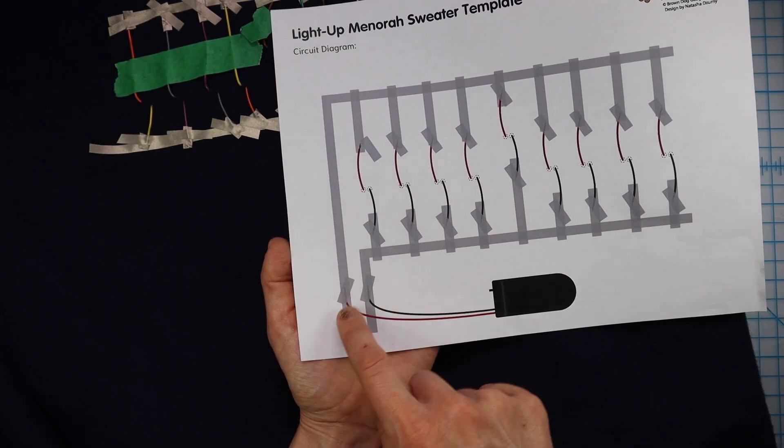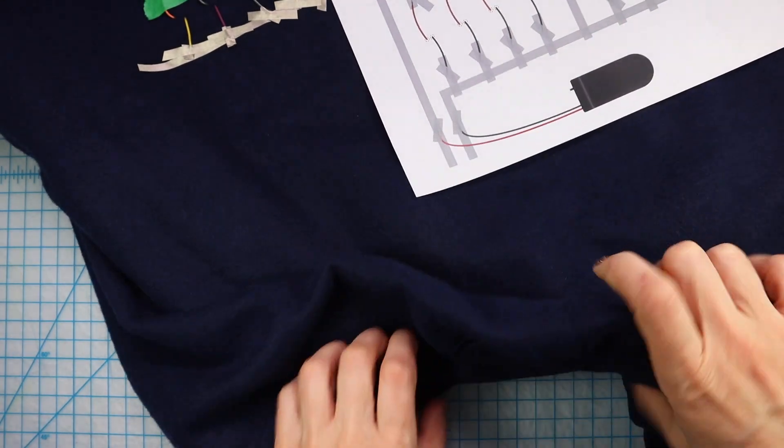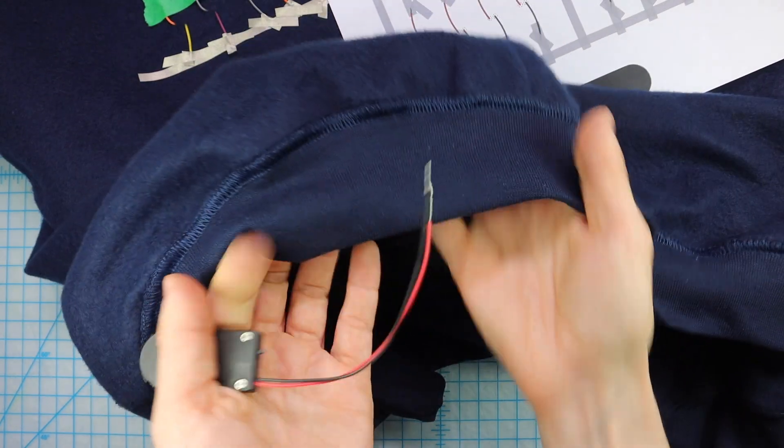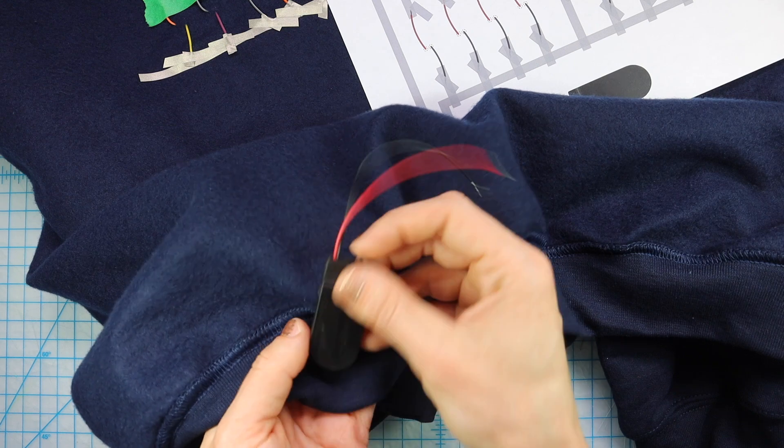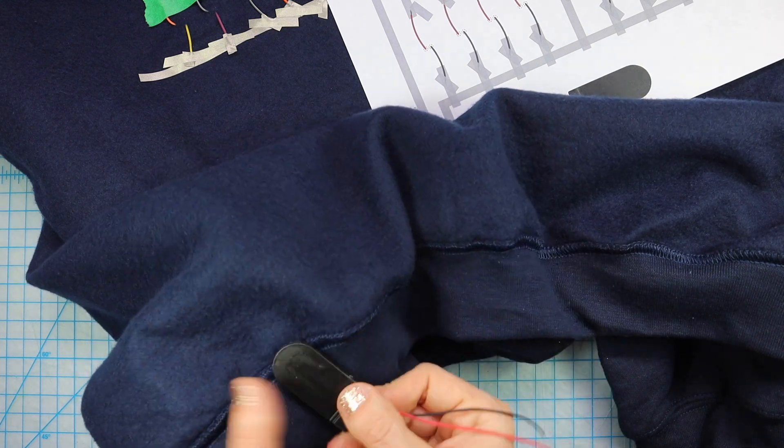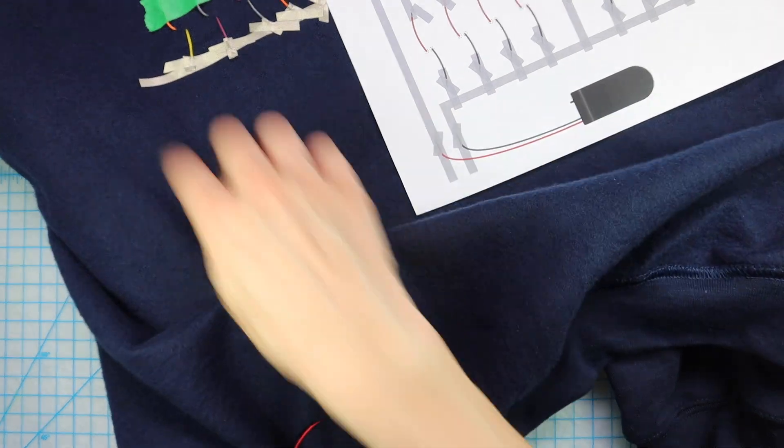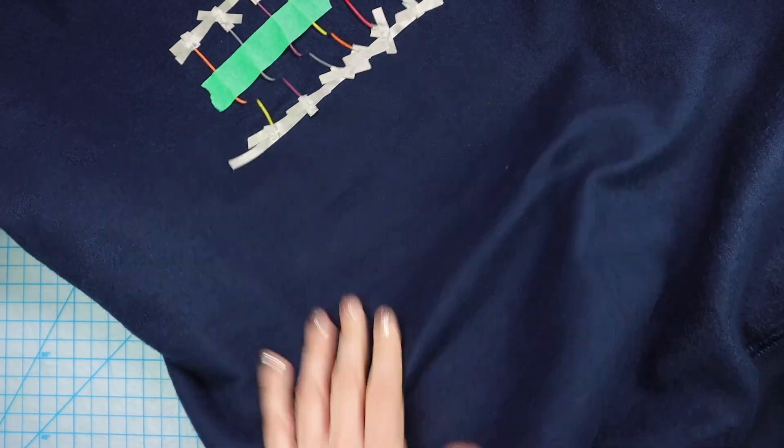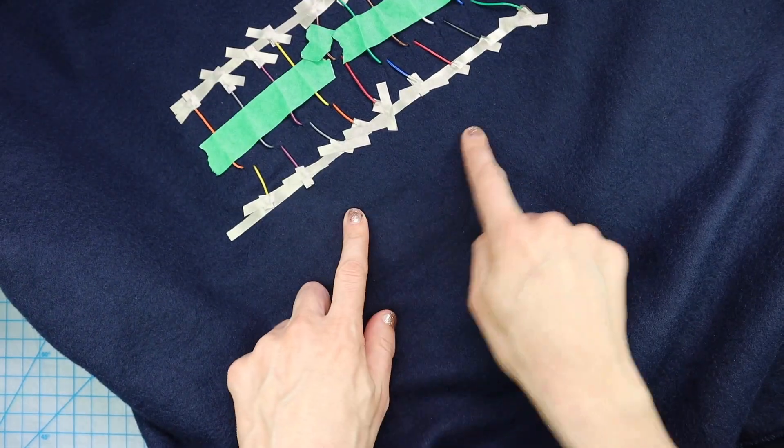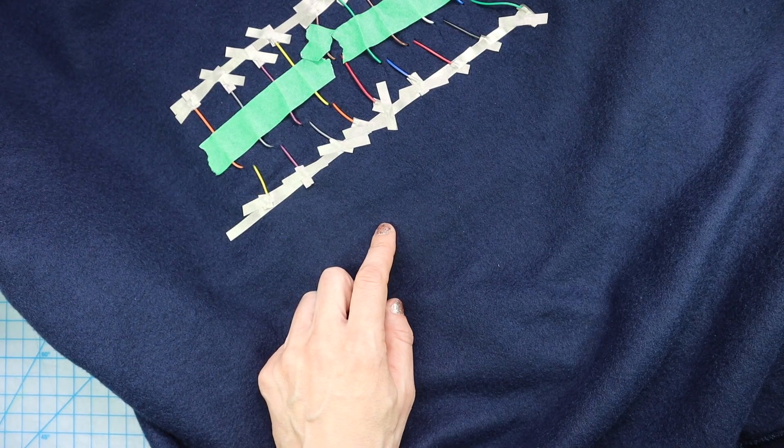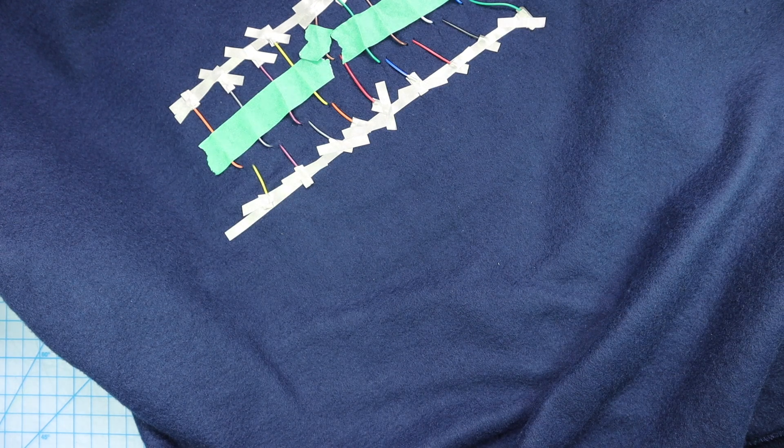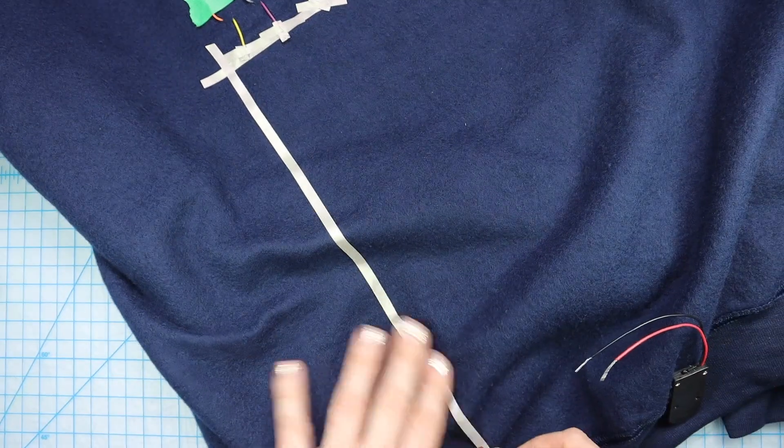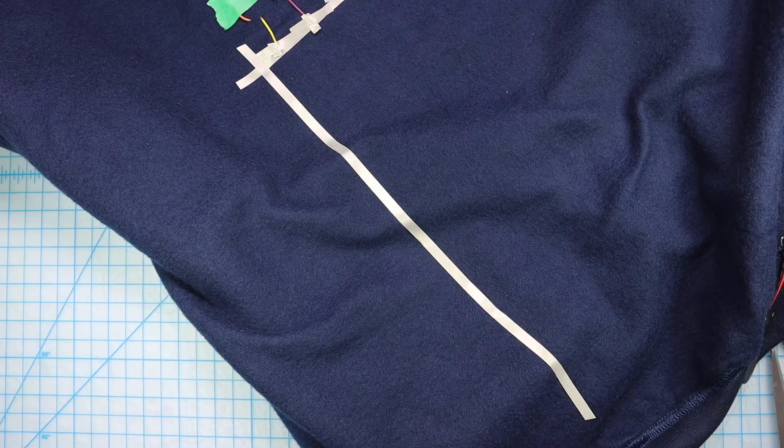I'm going to run these two pieces of maker tape all the way down to the base of the sweatshirt here so that I can put the battery pack right down here. And that way I can easily flip the switch on and off when I'm wearing the garment. So I'm going to go ahead and just make a really, really long run of maker tape down to that base. You could place the battery wherever you want. You could just put it right here and that just means you have to reach your hand inside the shirt to turn it on and off. It's really up to you. Place it where you think is best for your project.